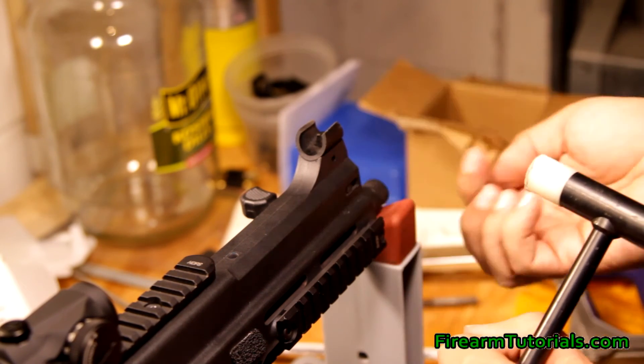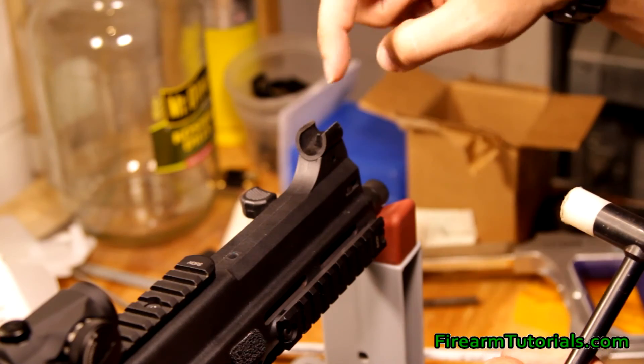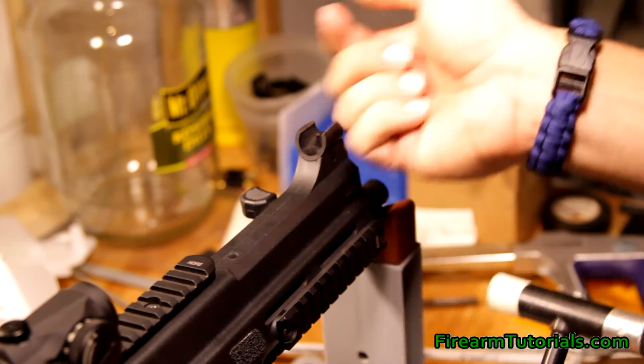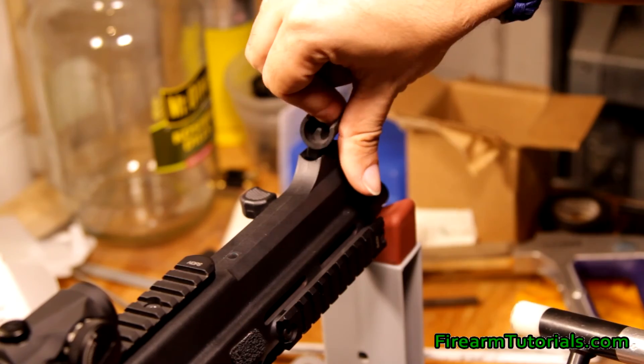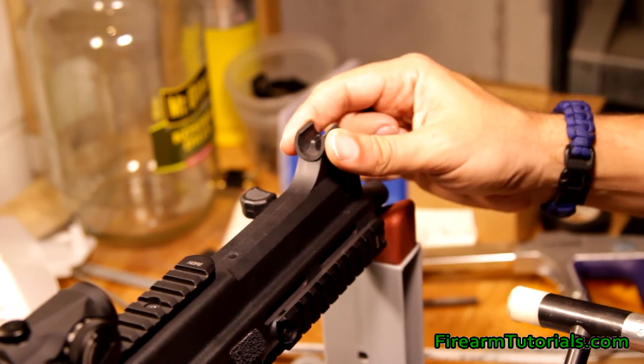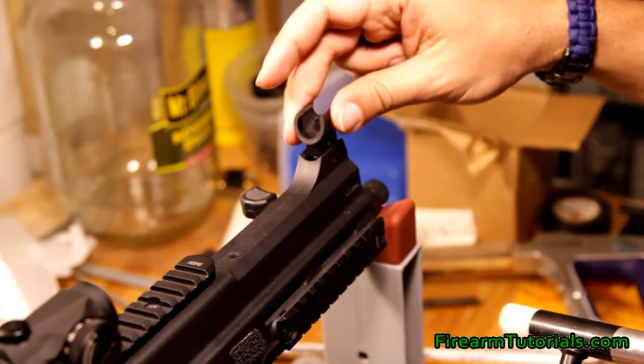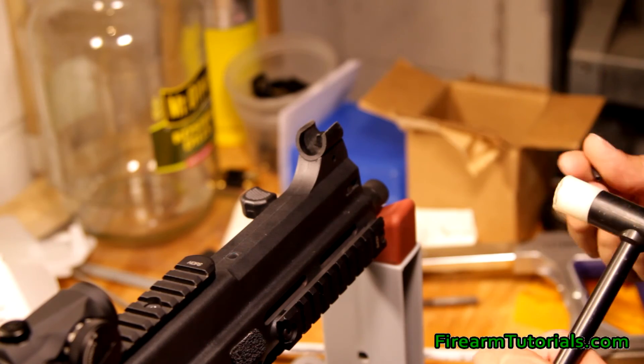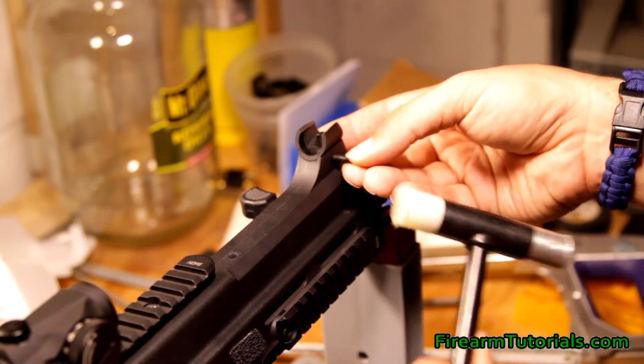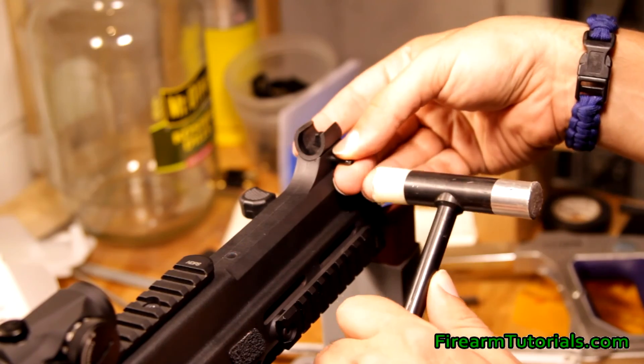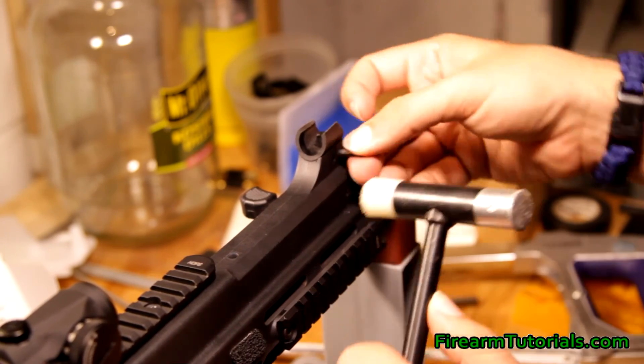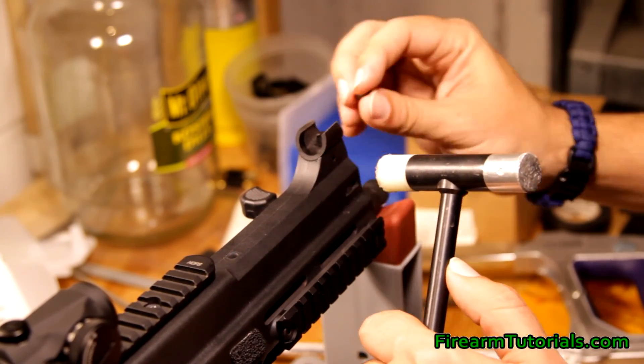We go to put this guy back in, just make sure that the flat part of the front post is towards the shooter. You can put it in this way, but it doesn't seem like it really lines up correctly. I don't know that you'd be able to get the roll pin back in correctly, so just line it up here. I'm going to use a soft hammer here, just in case I end up hitting the gun, it doesn't put a gouge in it.